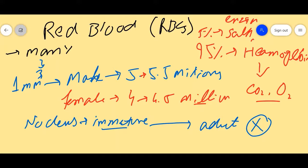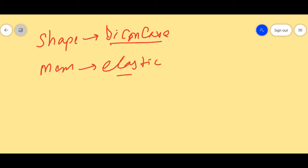We are talking about some other properties. When we talk about the shape, red blood cells are biconcave in nature, and the membrane is elastic in nature.